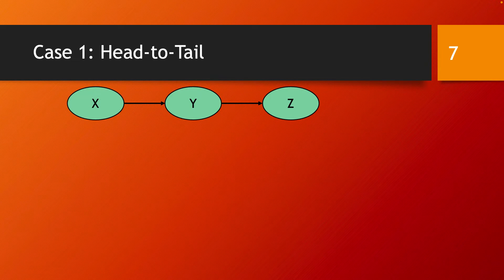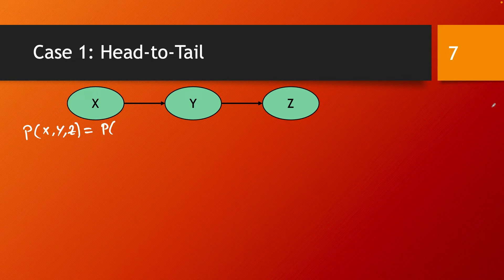To prove the conditional independence of the head-to-tail connections, we start from the joint probability distribution written based on the structure of the model. We write that the probability of X, Y, and Z starts from the root node X: this is the probability of X times, then Y depends on X so we get probability of Y given X times, and then Z depends on Y giving another conditional probability, Z given Y.